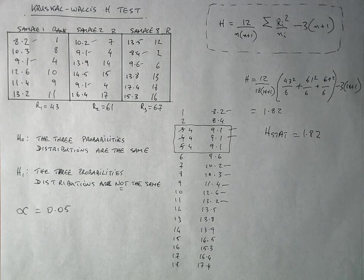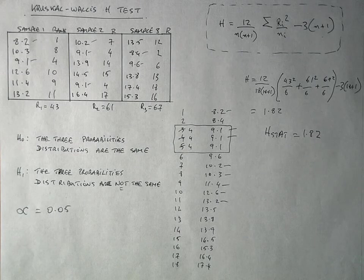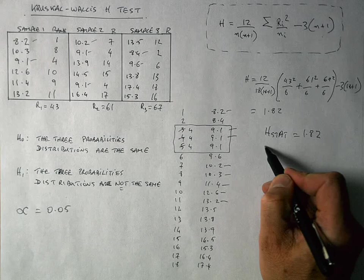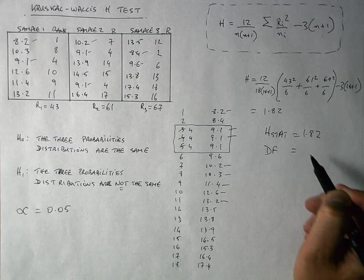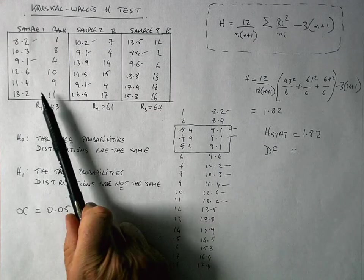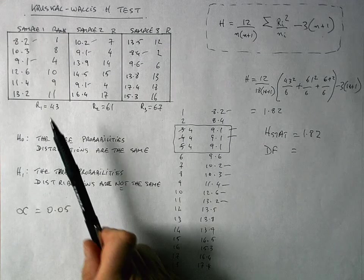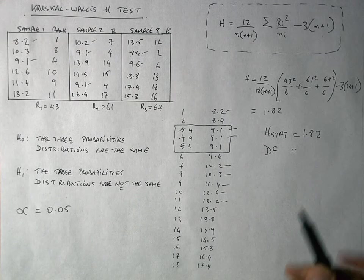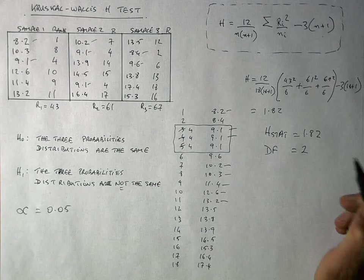Before I can determine whether this is a significant value or not, I need to determine the degrees of freedom. So I'm going to abbreviate that as degrees of freedom df. And it's a very simple calculation for a Kruskal-Wallis test. As in a one-way ANOVA, it is the number of groups or number of samples minus one. So I've got three groups here. So three minus one is equal to two. So I've got two degrees of freedom.